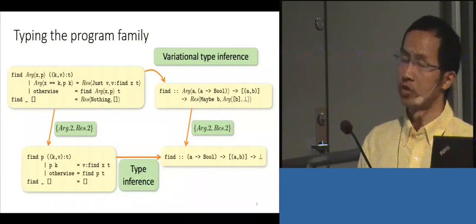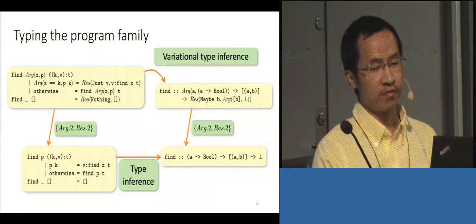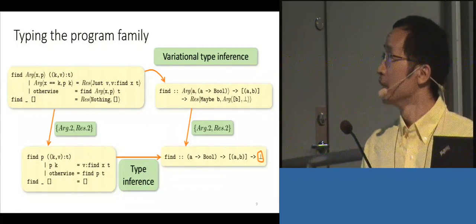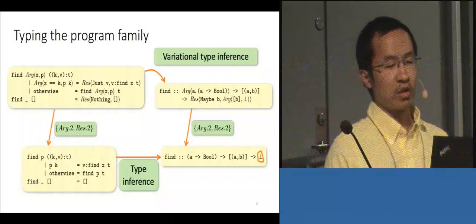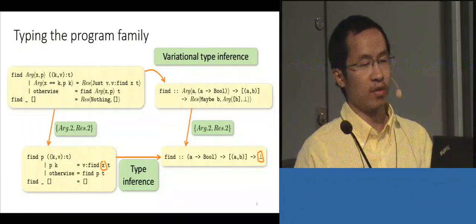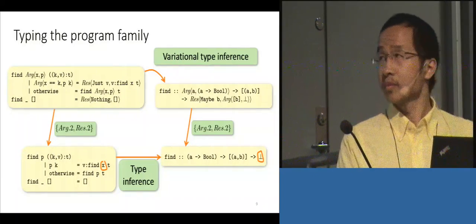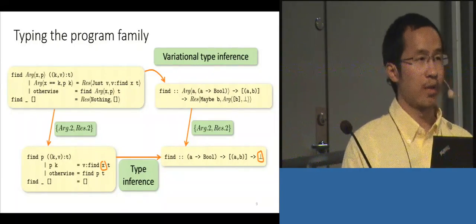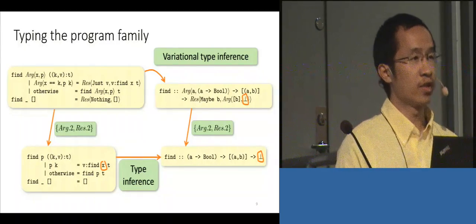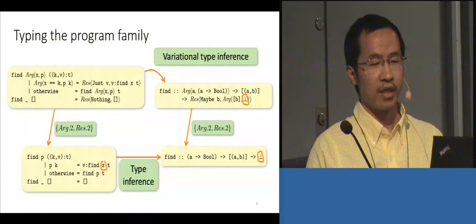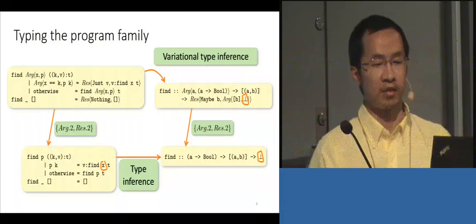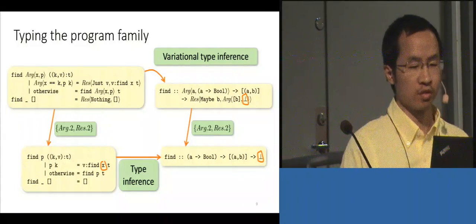If we select the second alternative from both arg and res, we find a type error in this type. Looking at the original plain program, we see we want to access x, but it is unbound. In fact, we don't have to generate all single types and inspect them — we can look at the variational type directly and see the type error is already there. We can also infer which location caused this error, which exactly corresponds to arg and res two.